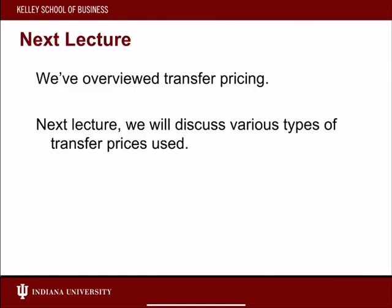In this lecture, we've learned what transfer pricing is — the price that one division within a company sells goods at to another division. We learned that we always have to look at this from the firm's perspective. We'll get more into how these transfer prices can influence managers' decisions, but firms always want to influence those decisions in a way that improves the overall firm and doesn't help one division at the cost of another. In the next lecture, we'll talk about various types of transfer prices that can be used, and we'll see there's some flexibility in setting these transfer prices.